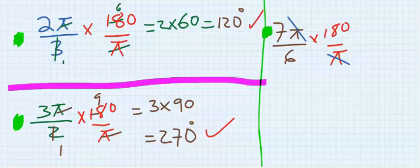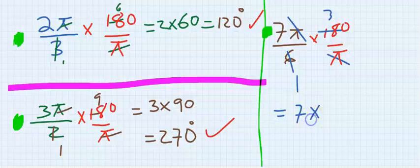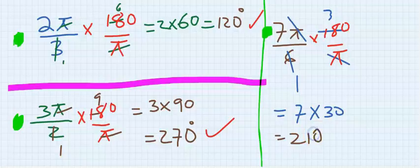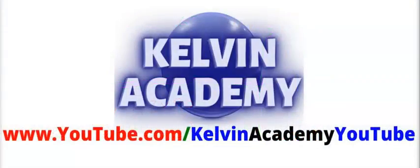6 here is 1, 6 here is 3, and we are going to have 7 times 30, and our answer is 210 degrees. I will see you in the next video.